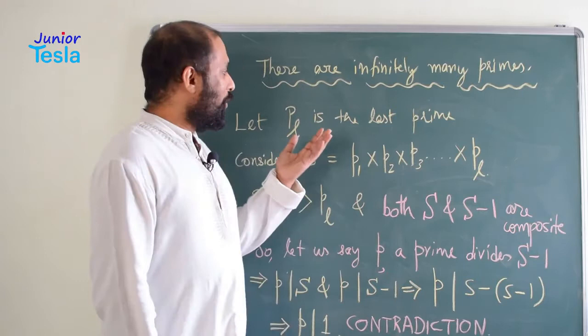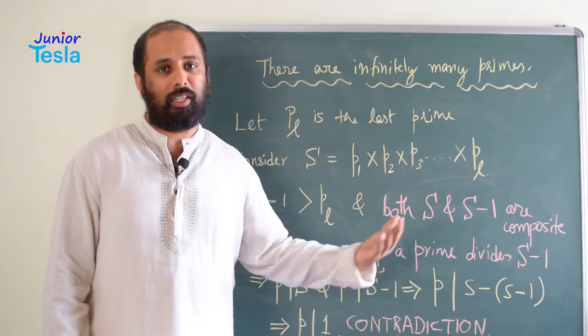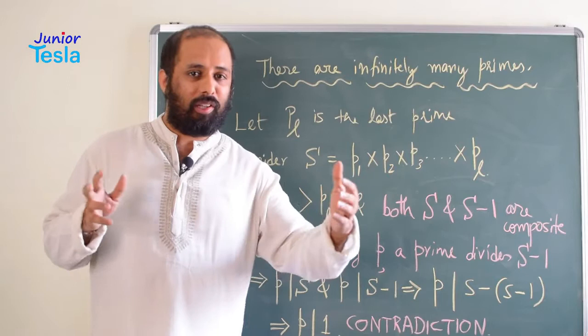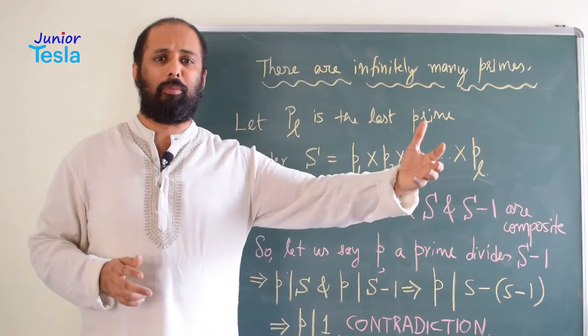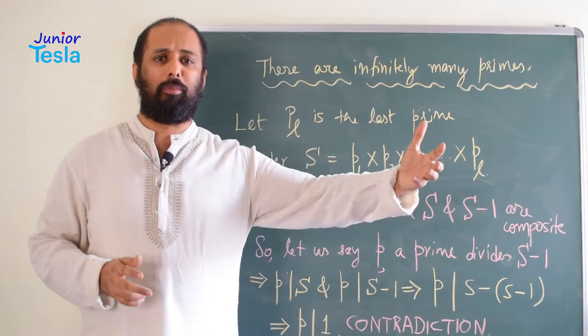Here, I am going to say that there is a last prime number. There is a last prime number PL. There is no other prime number after PL. And we have taken the product of all the prime numbers starting from P1, P2, P3, etc. We have taken all the prime numbers up to PL and found the product of it and call it as S.